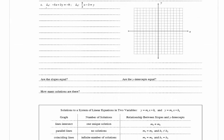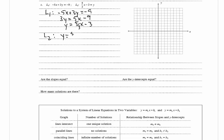In part C we have L1: negative 5x plus 3y equals negative 9, and L2: 5/3 x minus 3 equals y. Solving L1 for y: add 5x to both sides to get 3y equals 5x minus 9, then divide by 3 to get y equals 5/3 x minus 3. We can see that L1 is exactly the same as L2, since L2 is y equals 5/3 x minus 3.